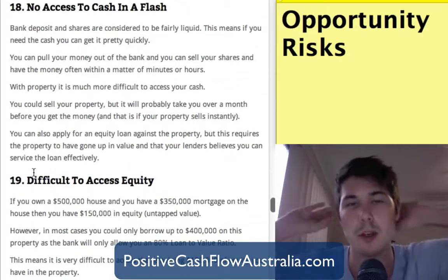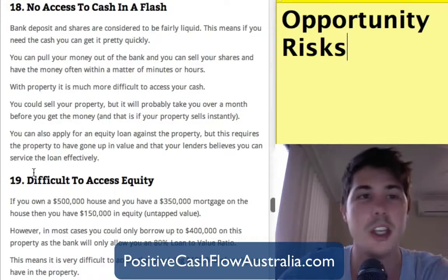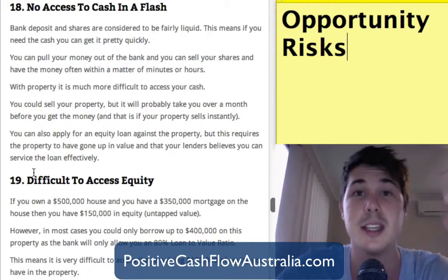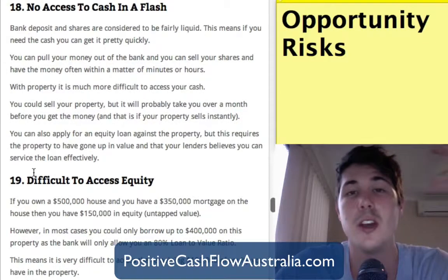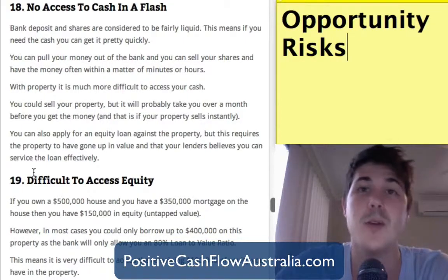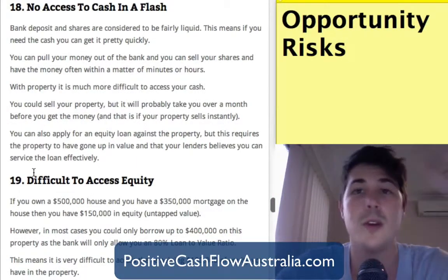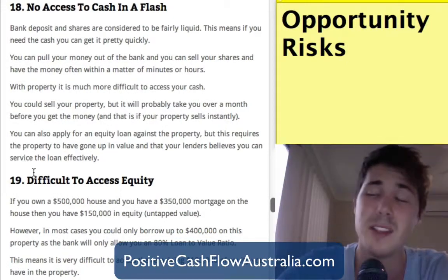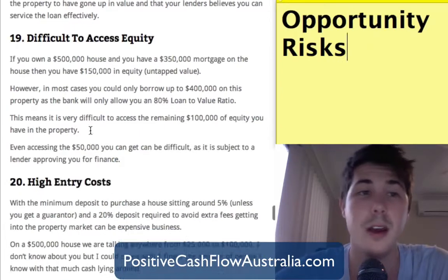Number eighteen is an opportunity risk: you don't have easy access to cash in a flash. Bank deposits and shares are fairly liquid — you can liquidate them and move your money elsewhere quickly. But when it comes to property, it can be much more difficult to access your cash. You could get an equity loan, but if you don't have enough equity you can't pull any money out. If you want to sell, depending on the area it could take a long time, and even a quick sale could have a six-week settlement period. Property is simply not as liquid as other assets.